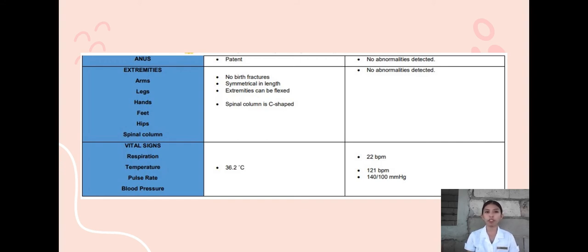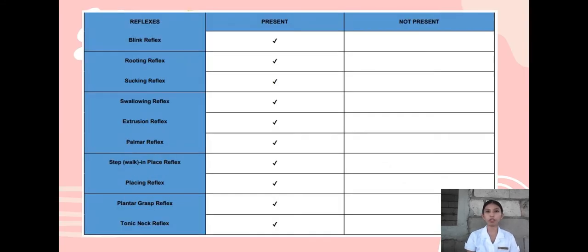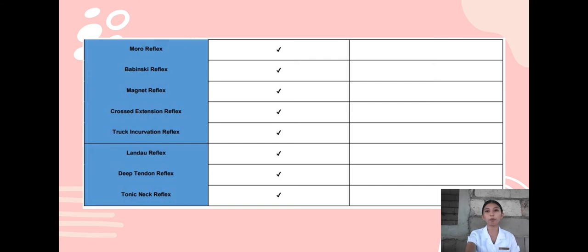For the vital signs: respiration is abnormal at 22 BPM; temperature is normal at 36.2 degrees Celsius; pulse rate is abnormal at 121 BPM; blood pressure is abnormal at 140 over 100. For reflexes, the following are all present: blink reflex, rooting reflex, sucking reflex, swallowing reflex, extrusion reflex, palmar reflex, step-walk-in-place reflex, placing reflex, plantar grasp reflex, tonic neck reflex, Moro reflex, Babinski reflex, trunk incurvation reflex, Landau reflex, and deep tendon reflex.